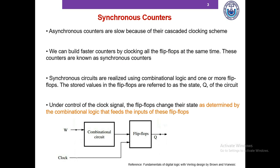Asynchronous counters are slow because of their cascaded clocking scheme. We can build faster counters by clocking all the flip-flops at the same time, which are called synchronous counters.